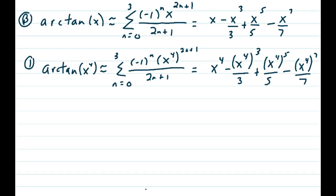Or we could take our polynomial and erase the x and put in an x to the 4th. We get x to the 4th minus x to the 4th now being cubed over 3 plus x to the 4th now being raised to the 5th over 5, and finally minus x to the 4th to the 7th over 7.